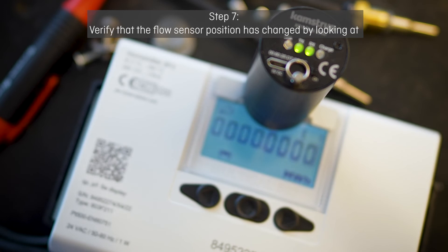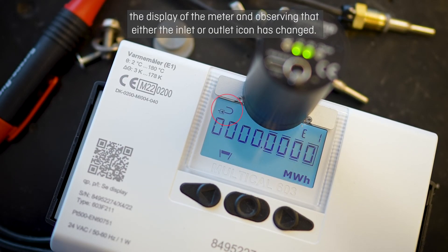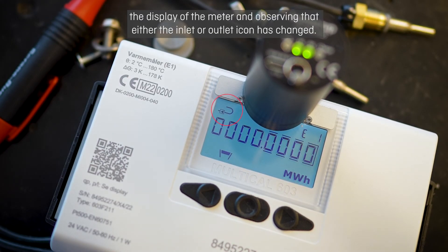Step 7. Verify that the FlowSense position has changed by looking at the display of the meter and observing that either the Inlet or Outlet icon has changed. Thank you for watching.